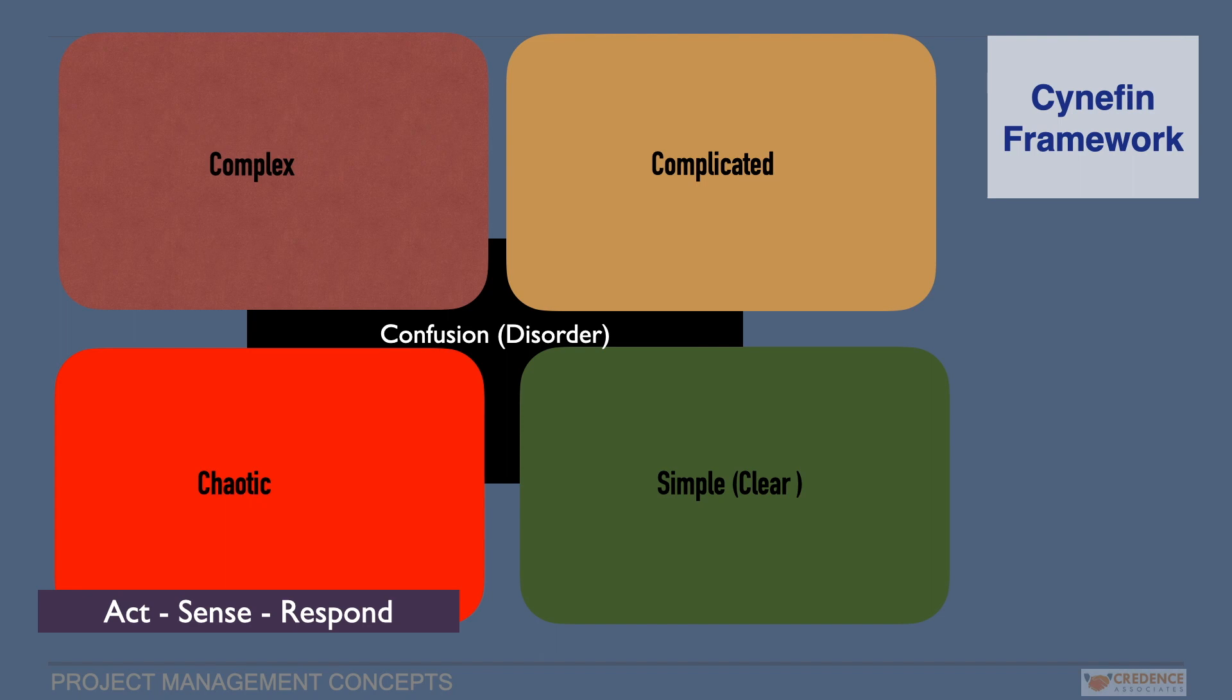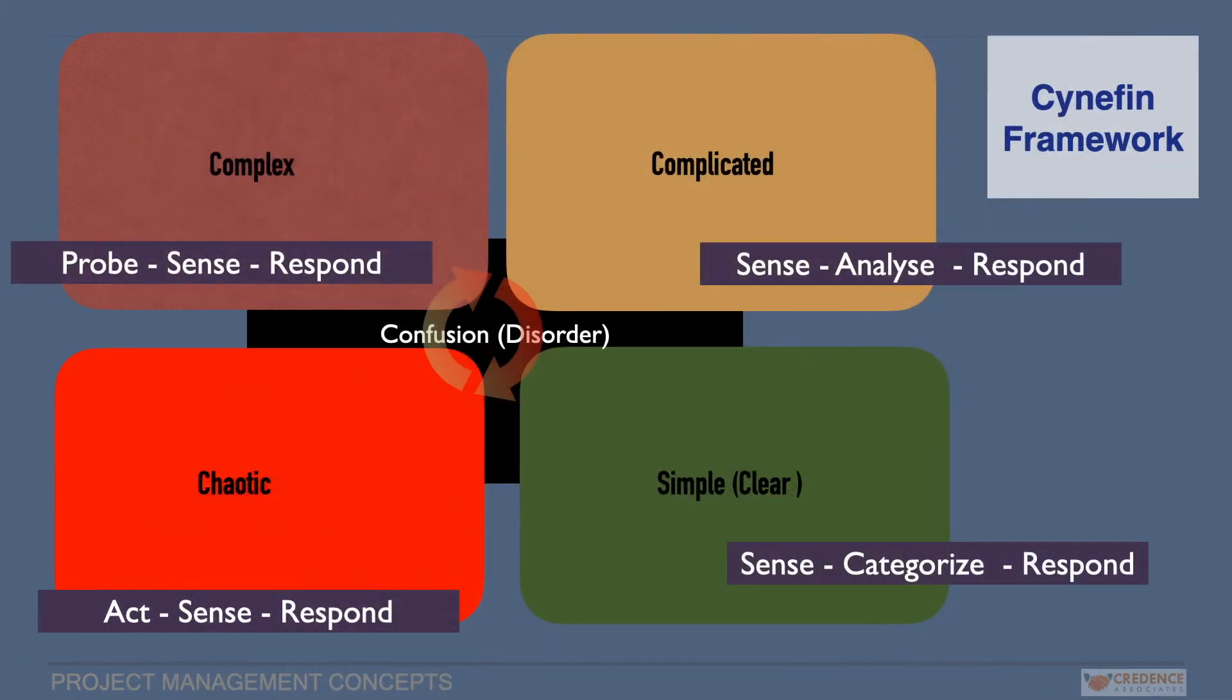When there is no clarity on where the problem fits, called as confusion domain, there is a disorder and requires a split or decomposition of the issue to move forward. As the knowledge increases the domain shifts clockwise, and this shift moves anti-clockwise in case of complacency. So a leader has to be alert and balance the wheel trying to handle all the domains as the situation arises, and ensure the drift is always clockwise.